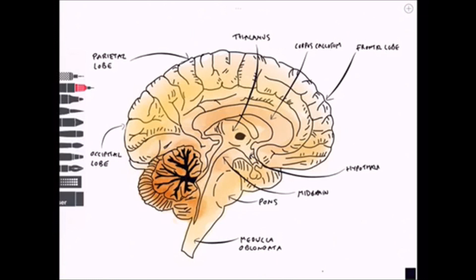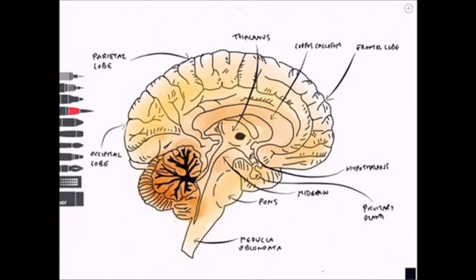Below and anterior to the thalamus we have the hypothalamus — remember, hypo meaning below the thalamus. It is important for dealing with physiological function, particularly dealing with equilibrium. It is connected to a glandular structure called the pituitary gland, and the hypothalamus produces two hormones released by that gland: oxytocin and antidiuretic hormone.